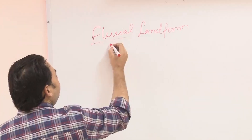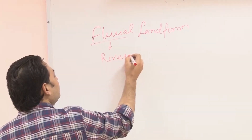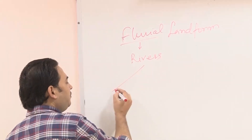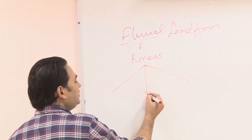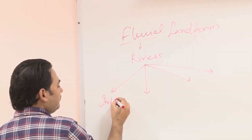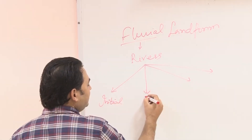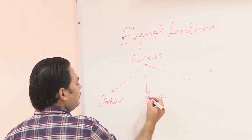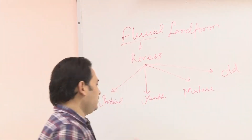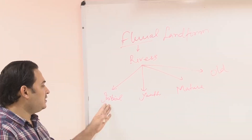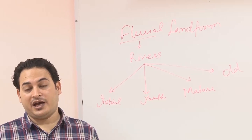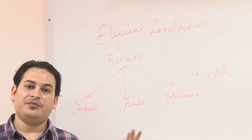Fluvial means related to rivers. When we talk about rivers, we know that there are basically four stages of a river. In the initial stage, rivers have lots of energy and are capable of eroding lots of sediments from the upland area.